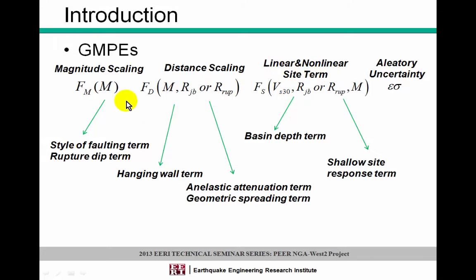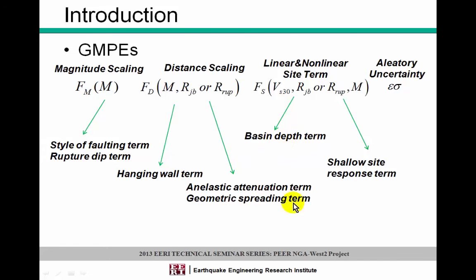For example, the Campbell-Bozorgnia model has the rupture dip term. Not all of the models have a hanging wall term, but some of them do. And pretty much all of the GMPEs now have the basin depth term.